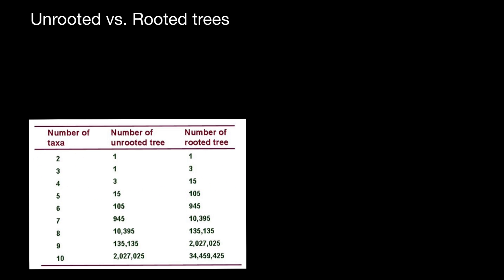Here's the first example. Number of taxa: two. We should get number of unrooted trees: one, and number of rooted trees: also one. For example, we have only two taxa, A and B, and we connect them like this. This is going to be an example of an unrooted tree.